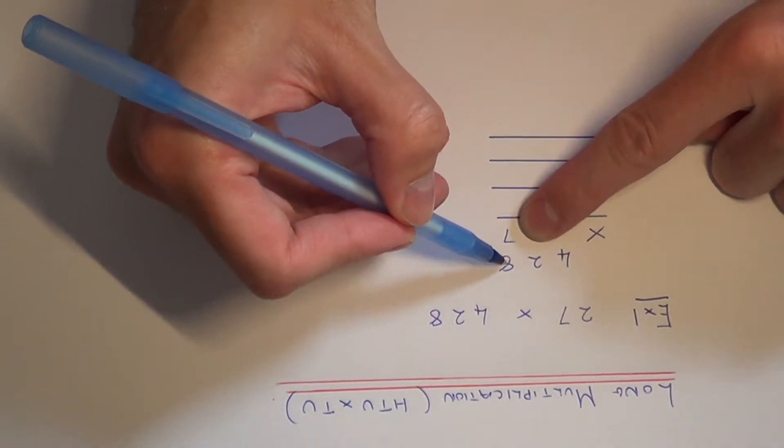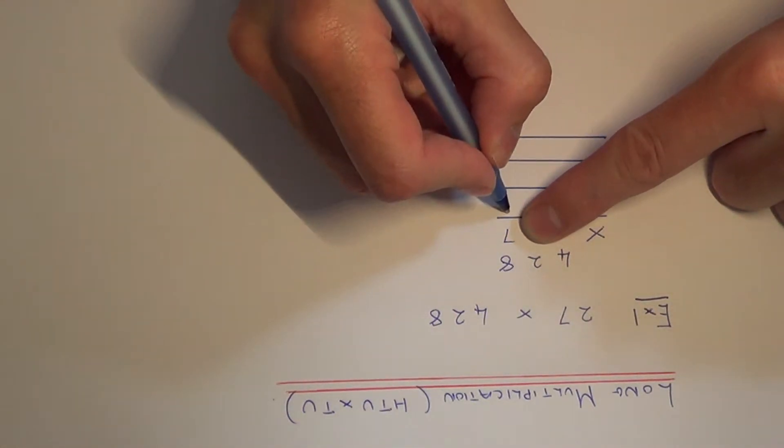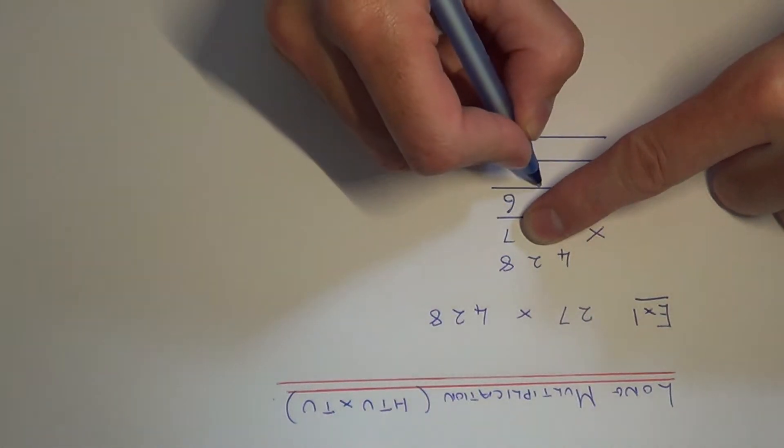So first of all start with the 8 and do 8 times 7. That's 56. So we put the 6 on the first answer line and carry the 5 underneath.